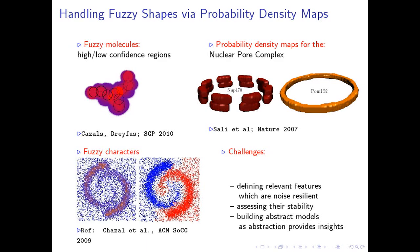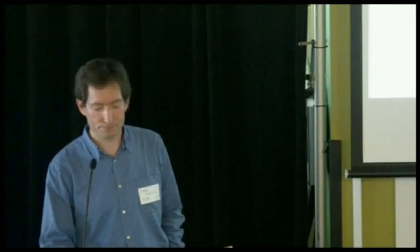These are real examples of probability density maps associated with the nuclear pore complex — probability densities associated to specific proteins NUP170 and POM152 within the NPC system. Pictures from data released with papers published in Nature five years back. Here's another example: looking at a point cloud, you'd likely say there are two clusters. Why? Because performing density estimation from the point cloud, you'd have two mountains separated by a valley. The challenge is disentangling the peaks, and the key issues are: defining noise-resilient relevant features, assessing feature stability, and building abstract models to get insights on phenomena under scrutiny.